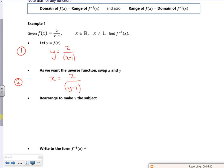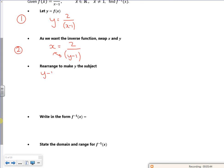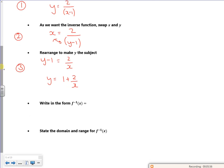And then I want to make y the subject. So if I switch them over, I've got y minus 1 is 2 over x. So y is 1 plus 2 over x. So that's my third step. First step, make it y equals. Second step, swap x and y. Third step, rearrange for y. And then fourth step is just to say it's f to the minus 1 of x.